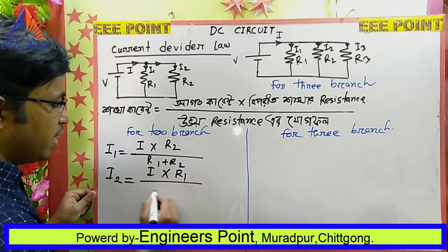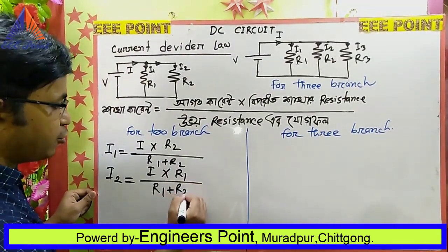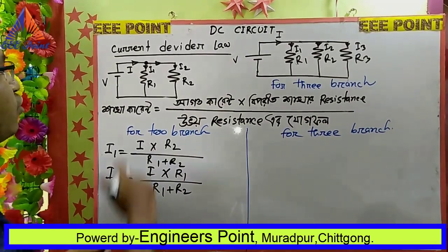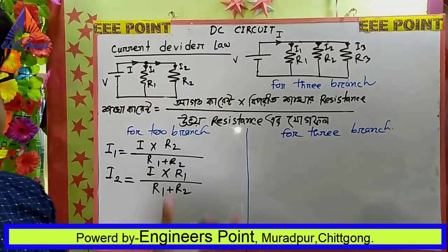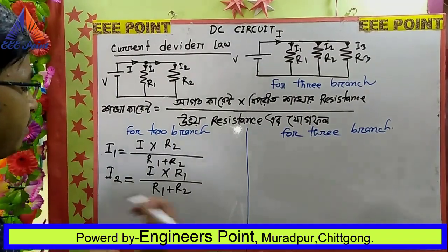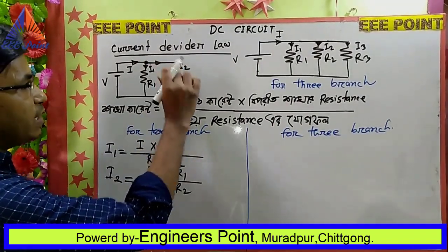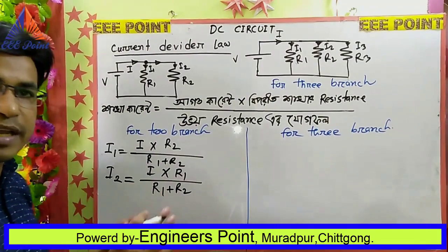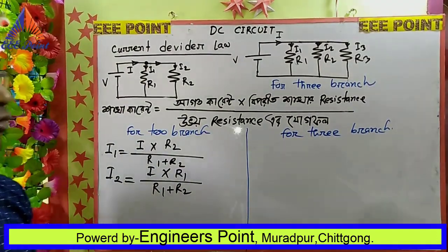We are able to apply KCL to the node at R2. If we have two branches, I2 is equal to the expression involving R2.